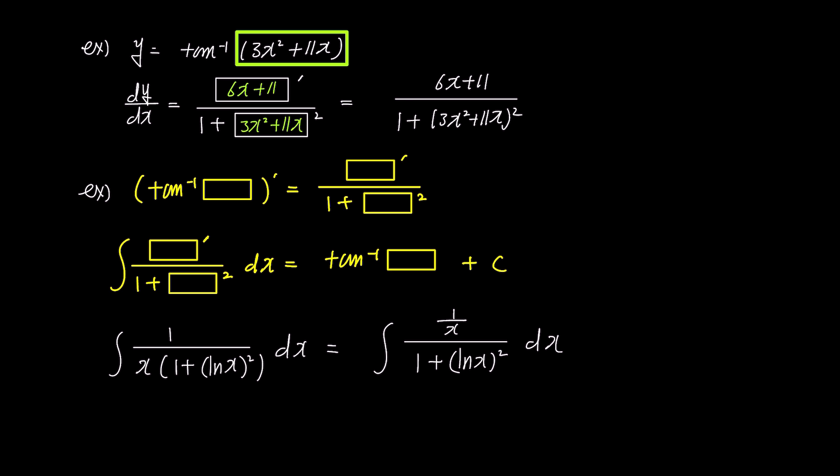Looking closely at this fraction, we can identify that the box is ln x and the numerator's 1 over x is box prime. So the answer to this problem is easily found as arctangent ln x plus c. How about that? We found the answer in just one line again.